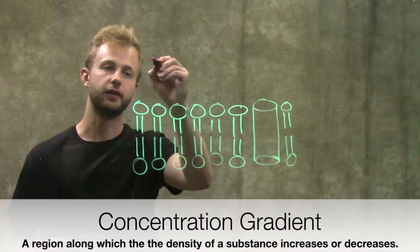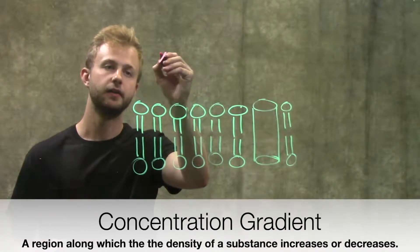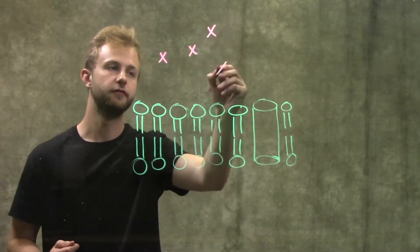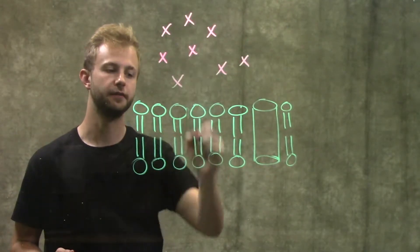A concentration gradient is formed by an unequal distribution of molecules on either side of the membrane.